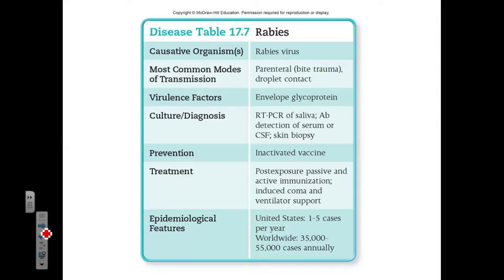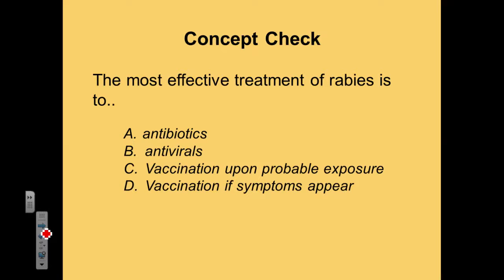The causative agent of rabies is the rabies virus, transmitted via bite. The best method for treatment is to receive the vaccine immediately after getting bit. If you do not, generally speaking, it results in death. Concept check: the most effective treatment of rabies is — antibiotics, antivirals, vaccination upon probable exposure, or vaccination only if symptoms appear? The correct answer is C: vaccination upon probable exposure. Most individuals in the United States are not vaccinated against rabies until they are bitten by a wild animal that may potentially have rabies.